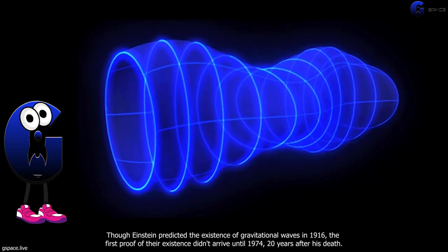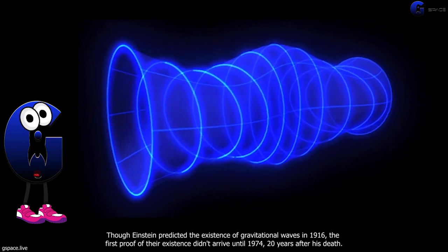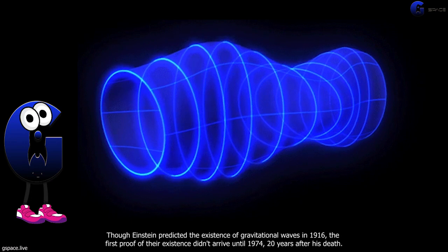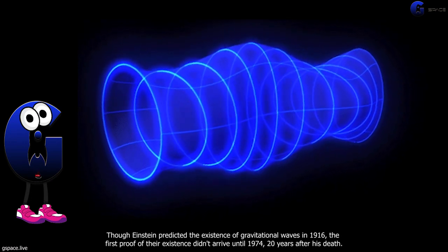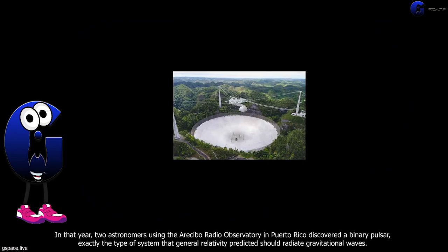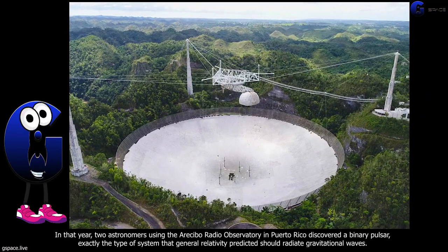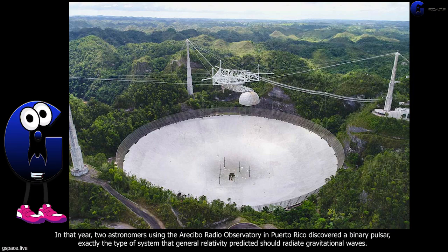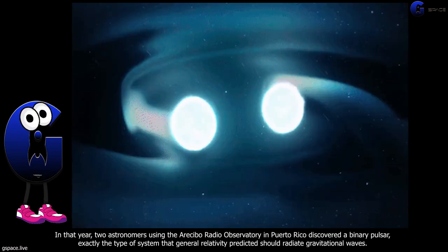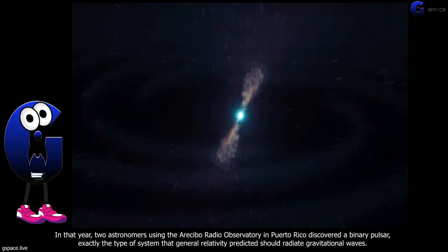Though Einstein predicted the existence of gravitational waves in 1916, the first proof of their existence didn't arrive until 1974, 20 years after his death. In that year, two astronomers using the Arecibo Radio Observatory in Puerto Rico discovered a binary pulsar, exactly the type of system that general relativity predicted should radiate gravitational waves.